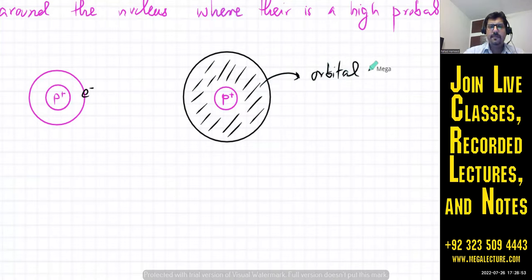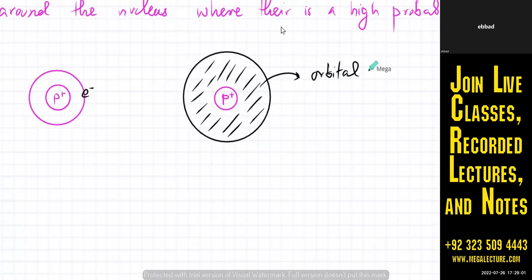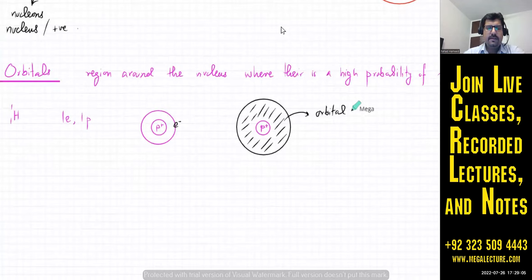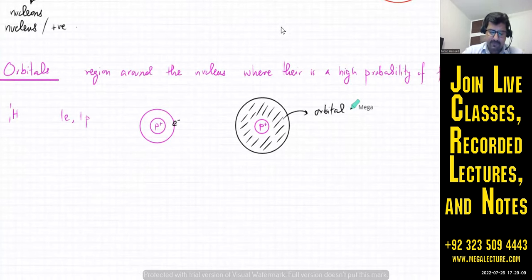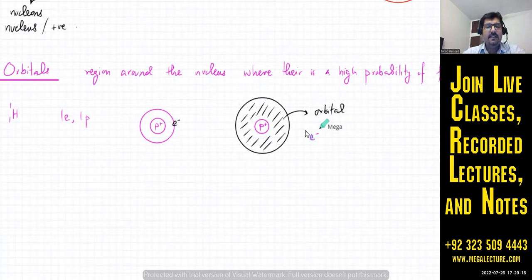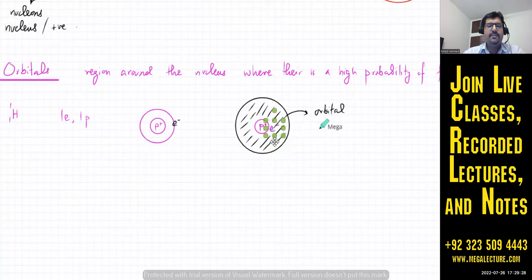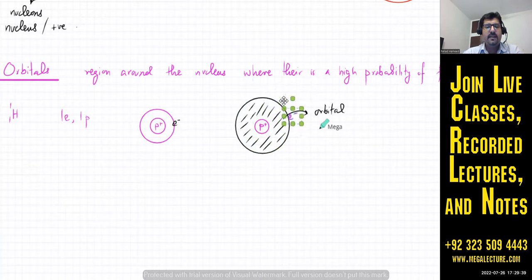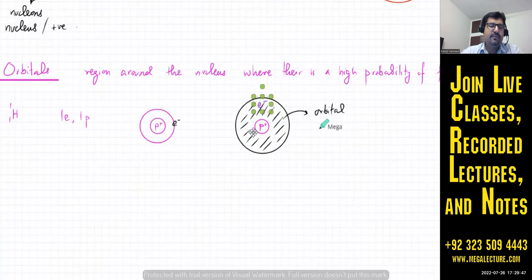The electron buzzes around randomly but stays mostly within the orbital because it is attracted to the positive nucleus. The boundary of the orbital is not hard — there is a low probability of the electron crossing it, but it could occasionally be found outside. Mostly it stays within that defined space.